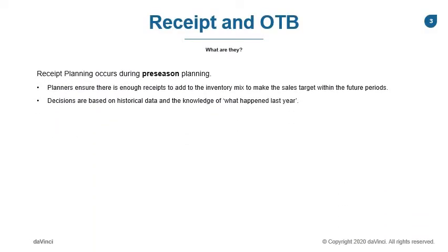Receipt planning occurs during the pre-season planning process. The planners use historical data combined with their knowledge of what happened last year. They will then make decisions on the flow of the receipts as they plan to ensure there's enough inventory to meet the sales targets.